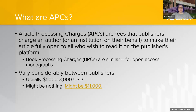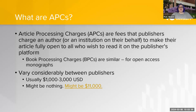I'll be talking a lot about APCs — Article Processing Charges — basically fees that publishers charge an author, or often an institution on their behalf, to make their article fully open to all readers on the publisher's platform. There are also BPCs, Book Processing Charges, for open access monographs. APCs vary considerably between publishers; on average they're between $1,000 and $3,000 US dollars, but they can be nothing or as high as $11,000.